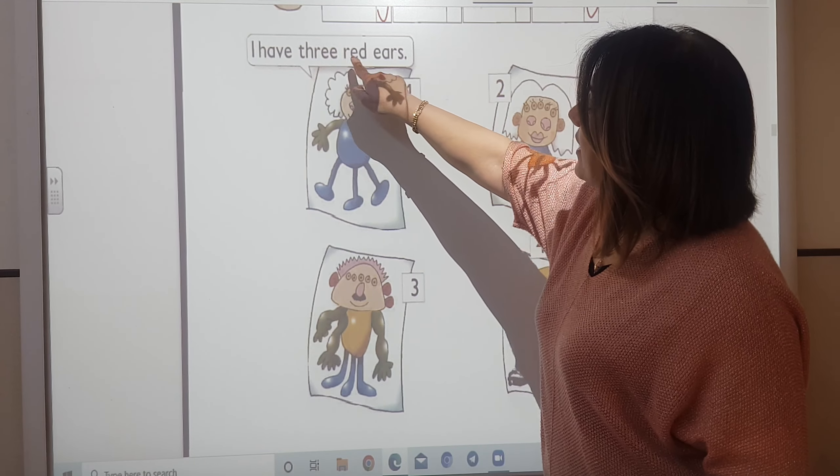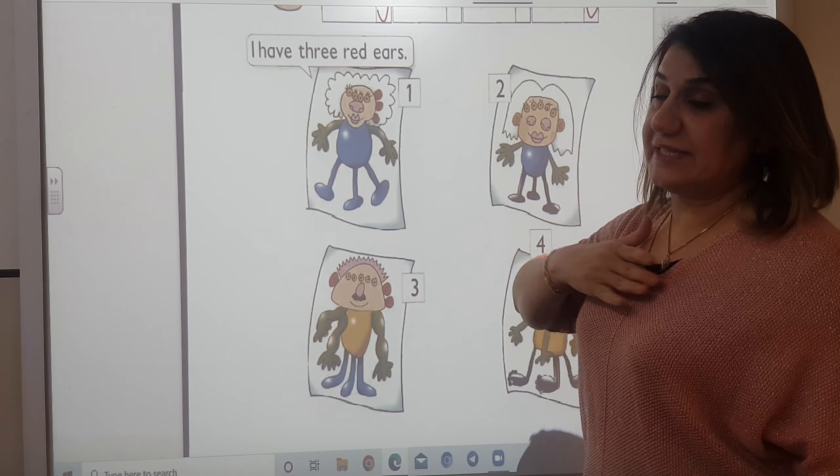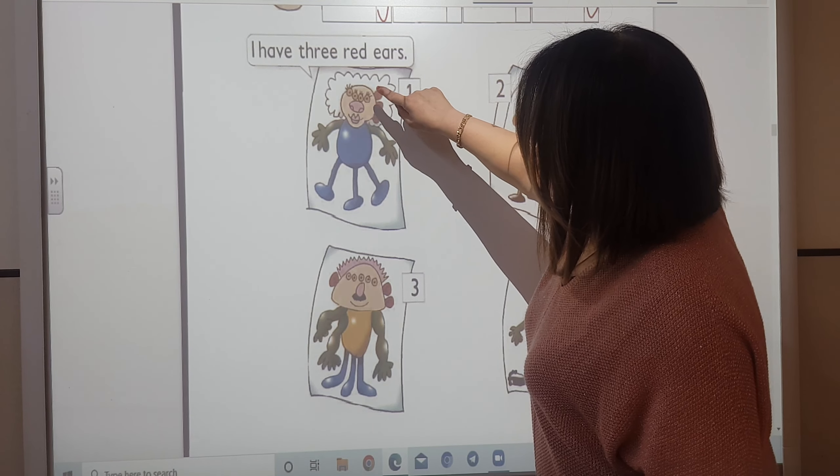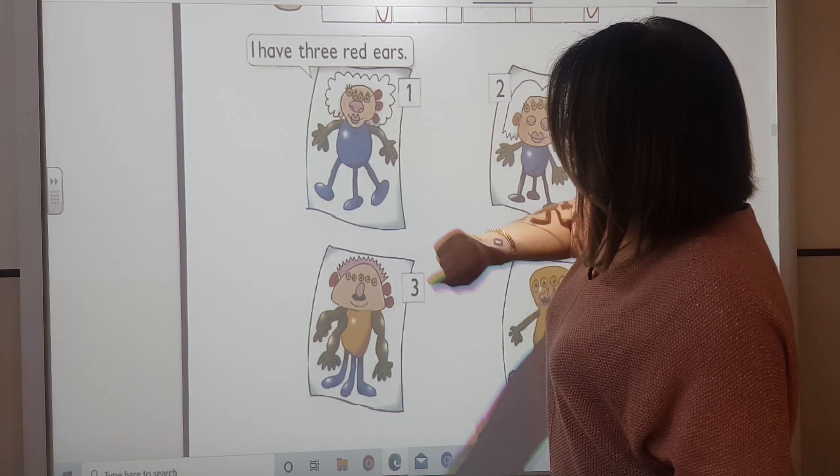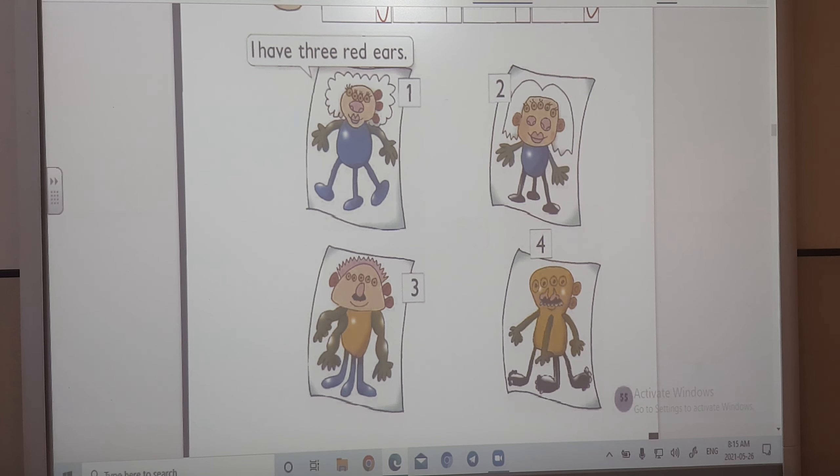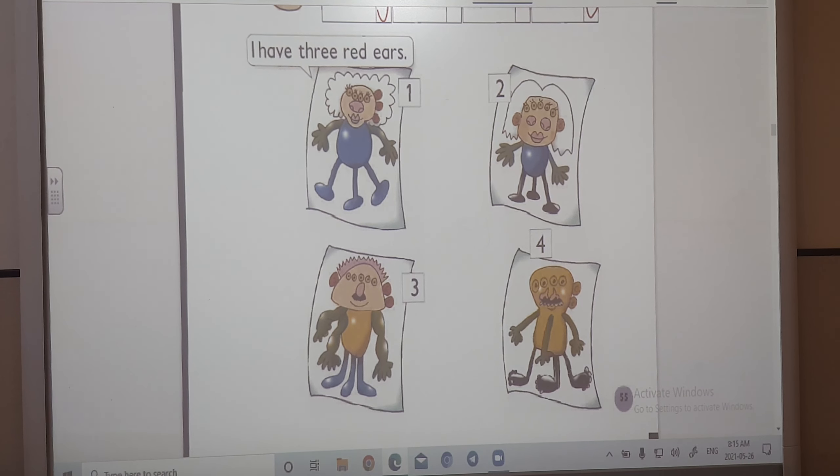I have three red ears. This is a monster. He's talking. I have three red ears. Okay? So, let's listen to these monsters. Now, we are going to listen to Neda, Ahmed and Iman. Hany and Iman. They are talking about their monsters. Listen and match.